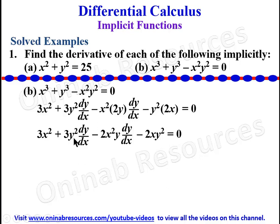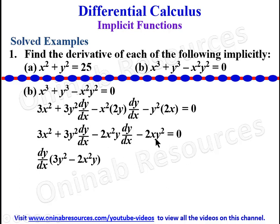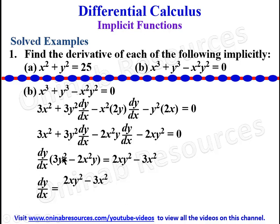Looking at the terms with dy/dx, we can factorize since dy/dx is common to both. We bring out dy/dx, so we have dy/dx(3y² − 2x²y). Taking the terms without dy/dx to the right-hand side: 2xy², then −3x². We divide both sides by the bracket (3y² − 2x²y), giving dy/dx = (2xy² − 3x²) / (3y² − 2x²y). That is the derivative of the function in problem 1(b).